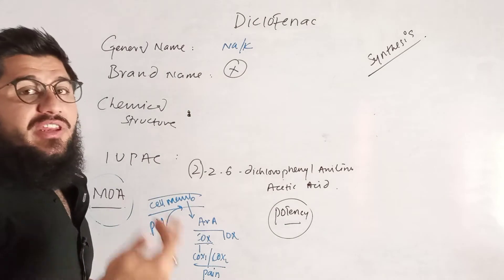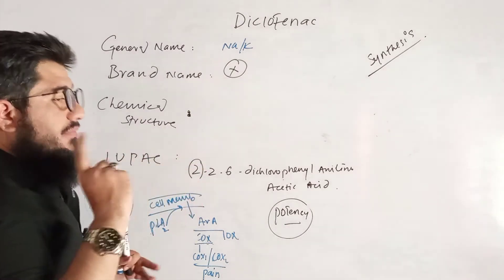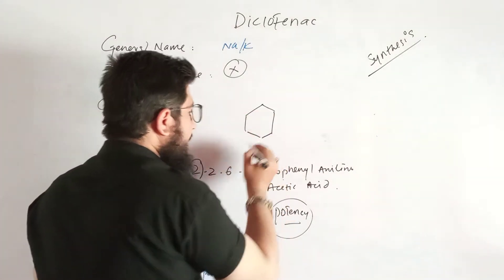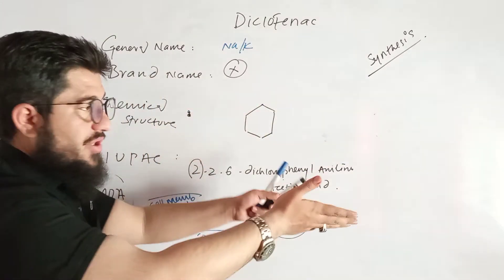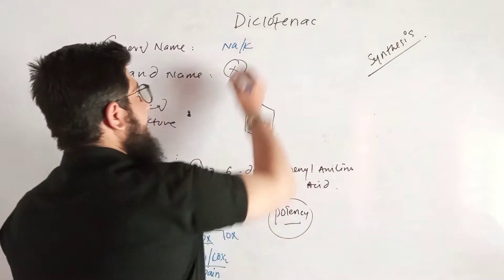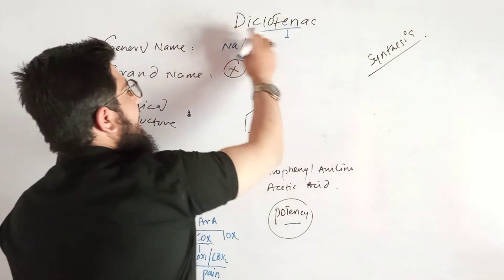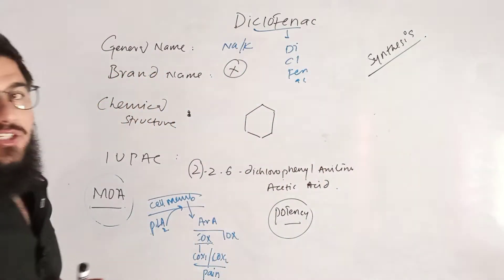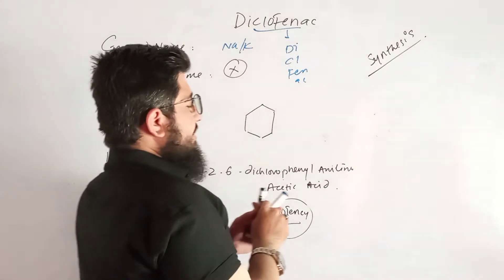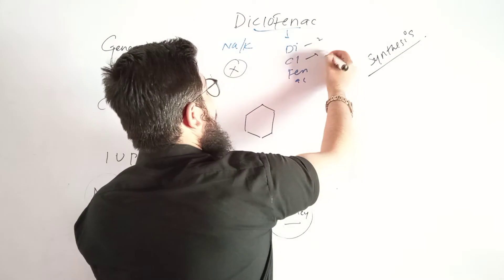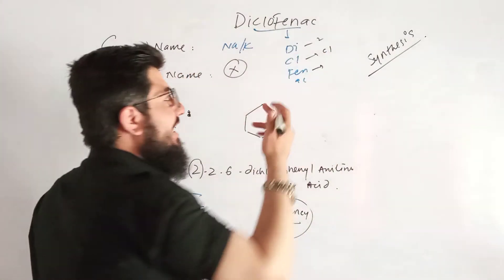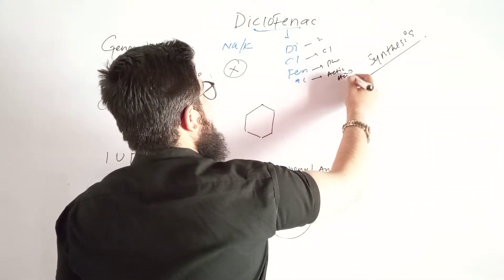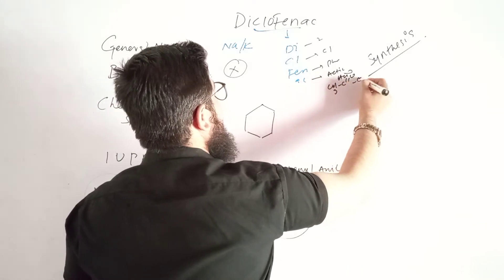Just look at the name 'diclofenac.' Before writing the structure, remember one important point: it is an acid, so we have one benzene ring. Now for the rest of the structure, go through the name. In diclofenac we see: DI, CL, PHEN, and AC. DI means the number 2; CHLORO means chlorine; PHEN means phenyl; and AC means acetic acid, whose formula is CH₃-C(=O)-OH.